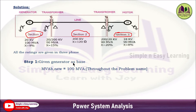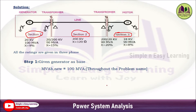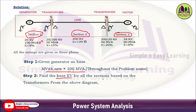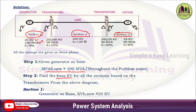Step 1: find or assume the base values. Since the problem specifies to choose the generator as the base, we select the generator ratings. The base MVA is 100 MVA, and this remains the same throughout the problem. For base KV, Section 1 uses the generator voltage rating — 20 kV — as the base KV.